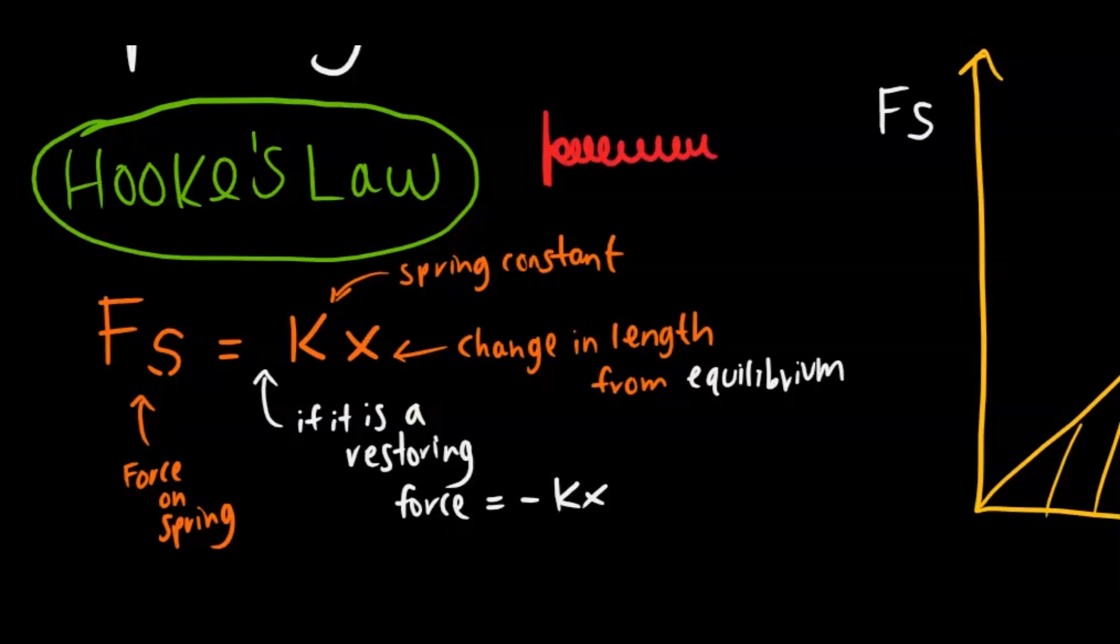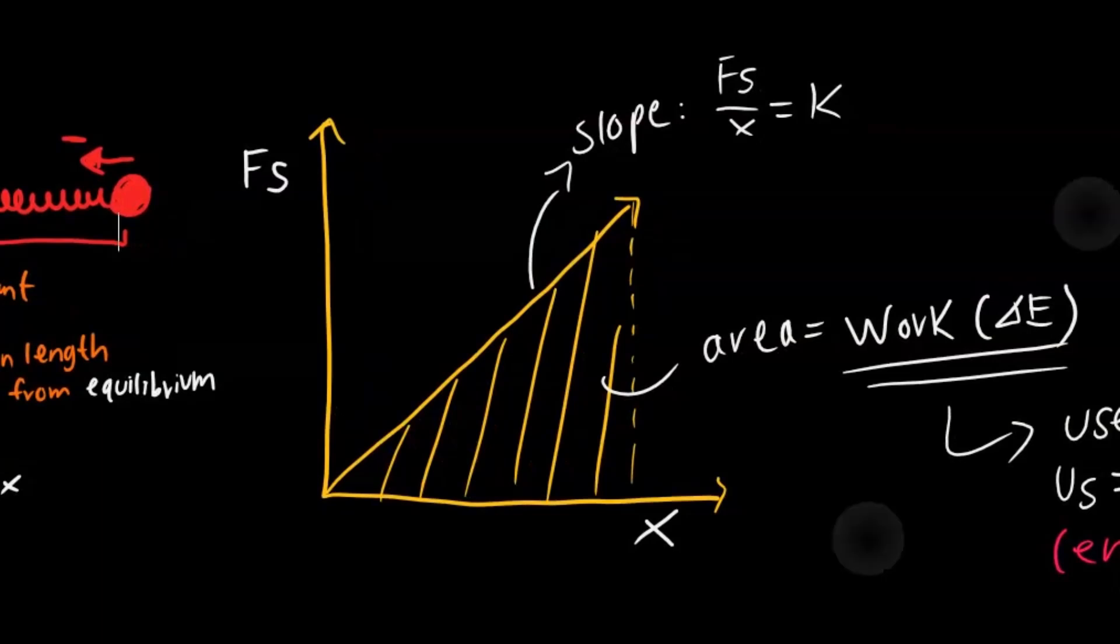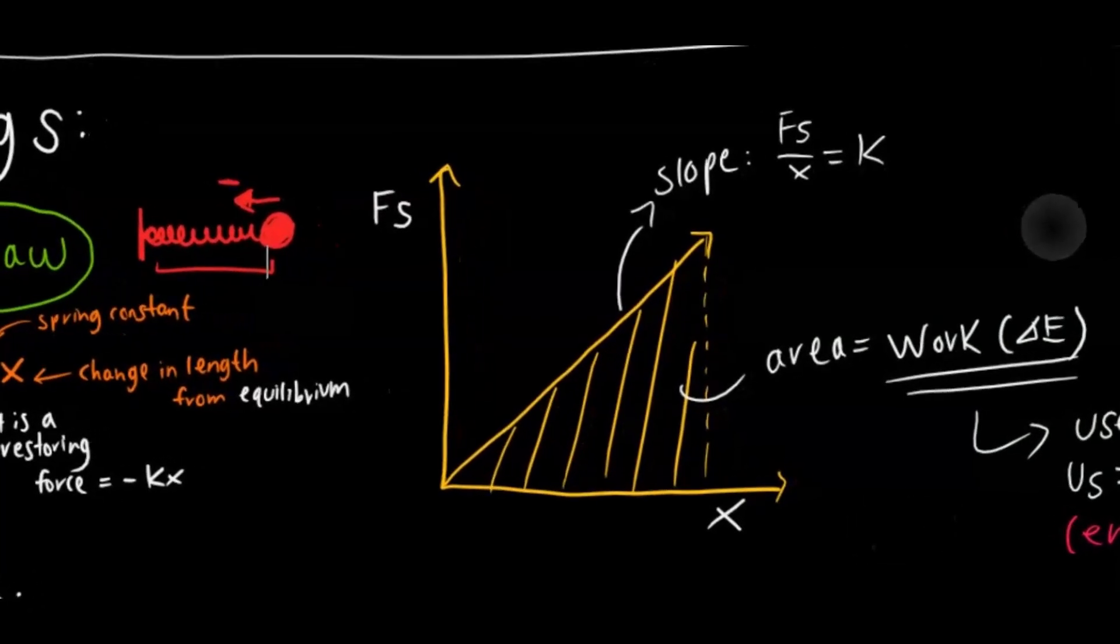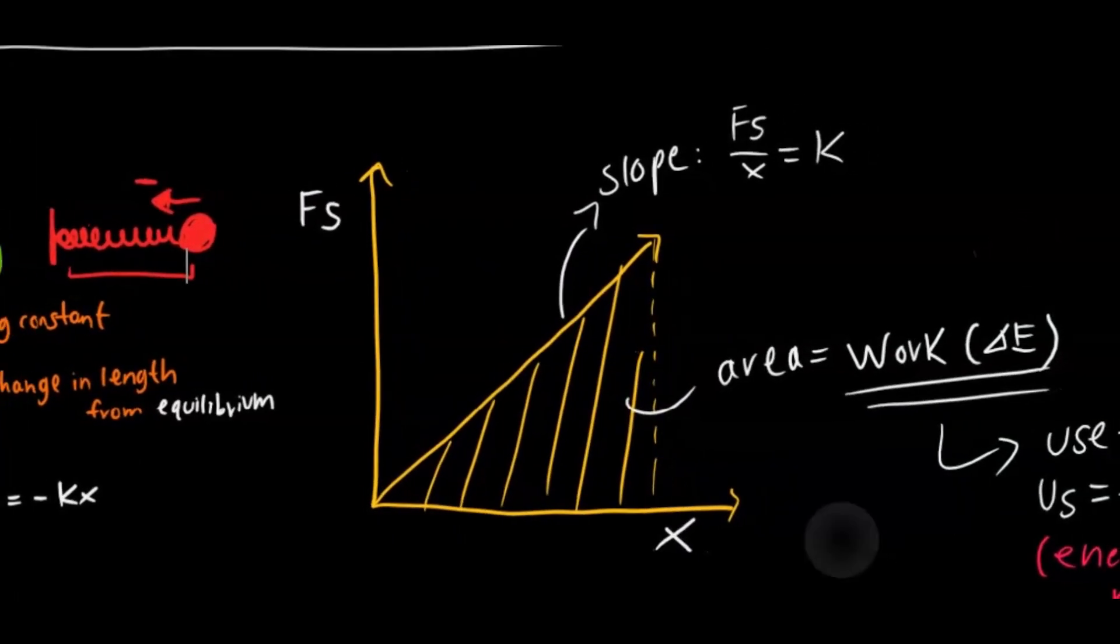So if you have, let's say this, and then you have the spring here, and there's a ball attached to the end. So once it reaches its maximum displacement, there needs to be a force which acts in the negative direction here to get that ball to go back and oscillate and go through its equilibrium position again.